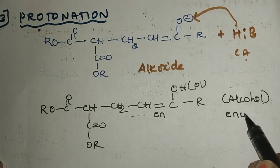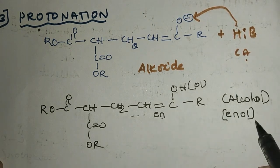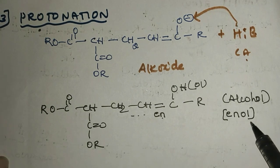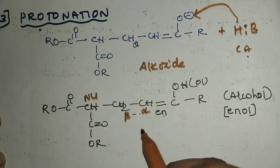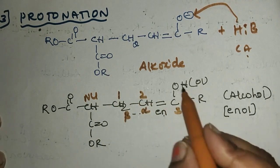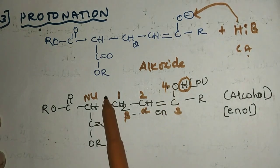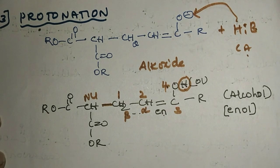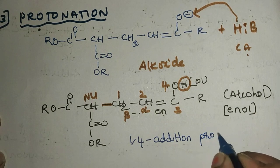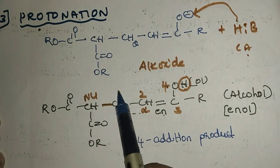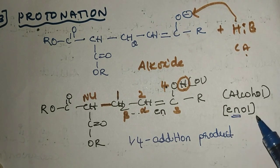The compound formed is called an enol — it has both an alkene and an alcohol group. The nucleophile is attached to the beta carbon. Numbering the atoms: carbon one, two, three, and four — the proton is added to the fourth atom (oxygen) and the nucleophile is added to the first carbon. This is therefore called a 1,4-addition product.